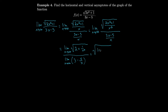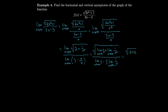Now we can pass the limit through. The limit of 1/x² is 0 and the limit of 1/x is 0, so this becomes √(2+0)/(3-5·0) = √2/3. So y = √2/3 is a horizontal asymptote.